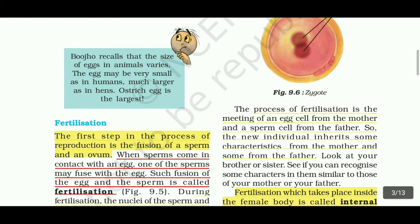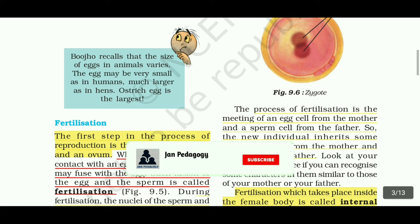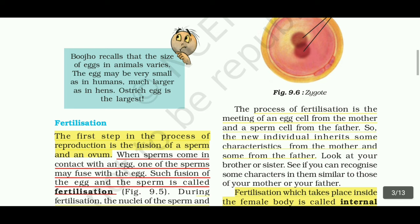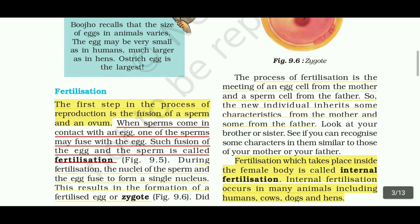Now, fertilization. The first step in the process of reproduction is the fusion of a sperm and an ovum. When a sperm comes in contact with an egg, one of the sperms may fuse with the egg. Such fusion of an egg and a sperm is called fertilization. During fertilization, the nucleus of the sperm and the egg fuse to form a single nucleus. This results in the formation of the fertilized egg, or zygote.